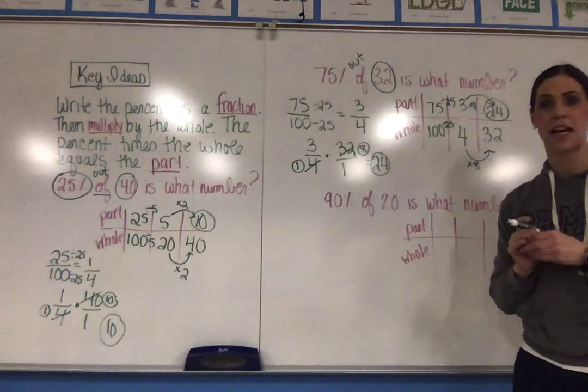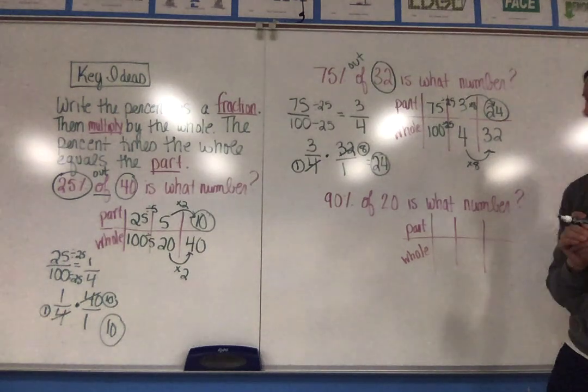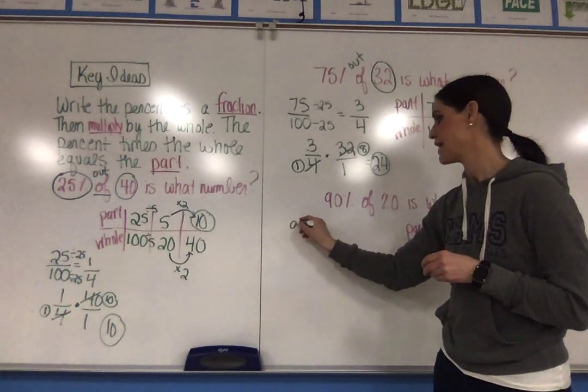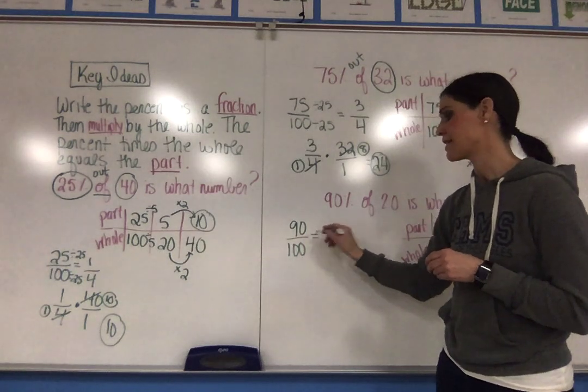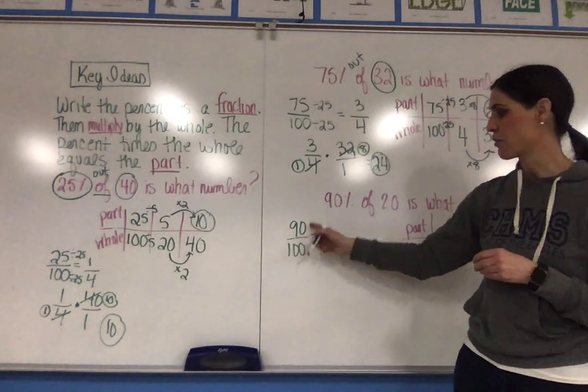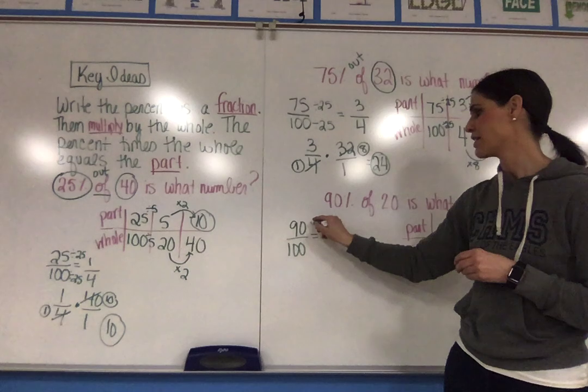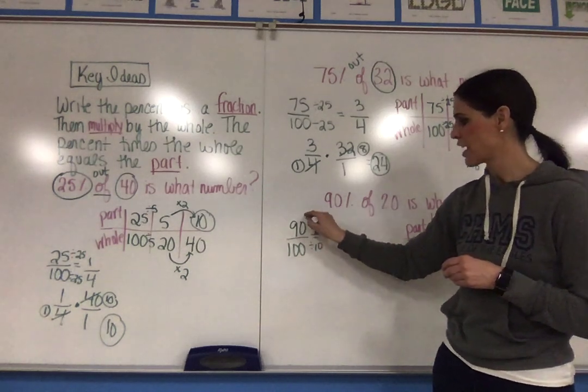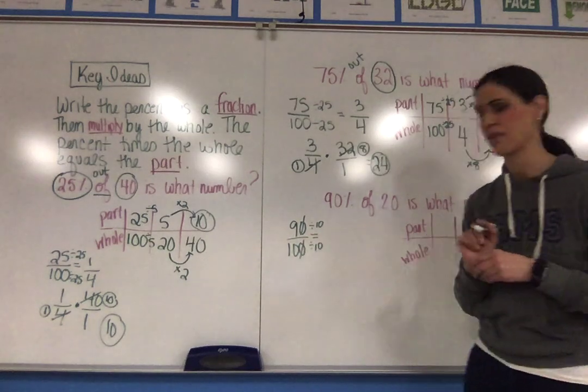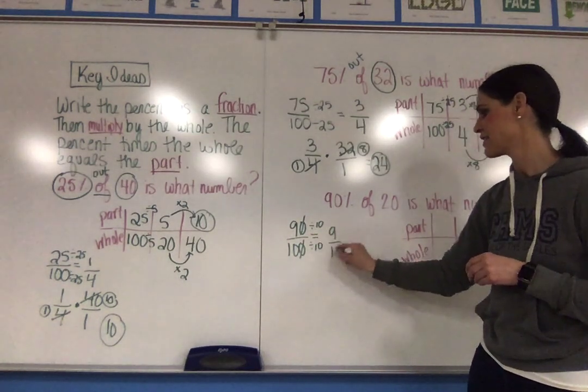The last example is 90% of 20 is what number? 90 over 100. I need to simplify it. Now since these both end in a 0, that tells me that they are both divisible by 10, which is the same as kind of just getting rid of that 0 there. So that's 9 tenths.